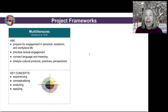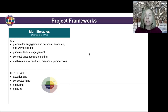Multiliteracies intentionally and deliberately connects language forms to the meanings they express in texts, and it provides students with tools to analyze cultural products, practices, and perspectives. This pedagogy is enacted through four core pedagogical acts or knowledge processes, which represent different ways of thinking, knowing, and engaging with texts. Students can experience a text through basic comprehension, conceptualize form-meaning connections, analyze sociocultural messages, and apply the knowledge that they've learned from texts.